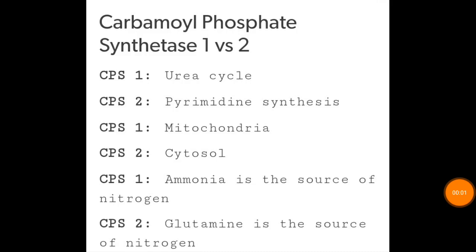Hello friends, this is biochemistry part 2 tables. Now we'll read about carbamyl phosphate synthetase 1 and 2 differences. CPS2 is the rate limiting step for pyrimidine synthesis, as we studied in the previous video. CPS1 is the rate limiting step for the urea cycle.